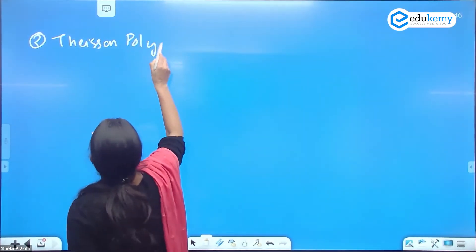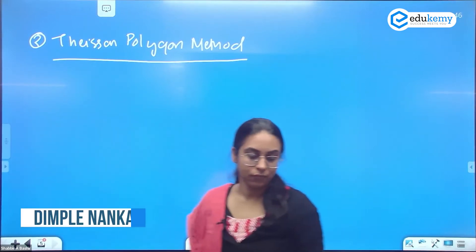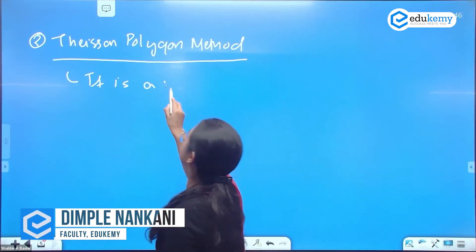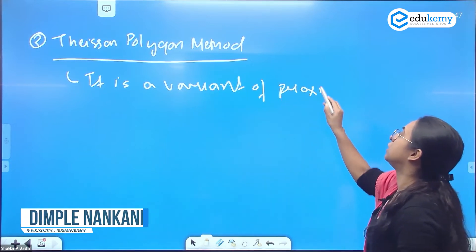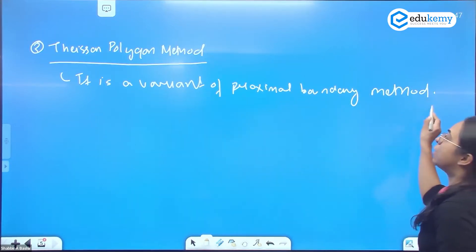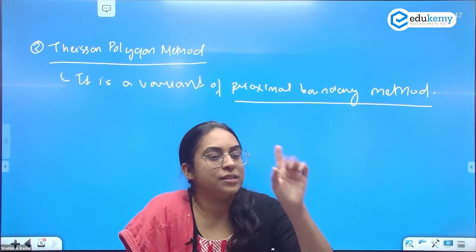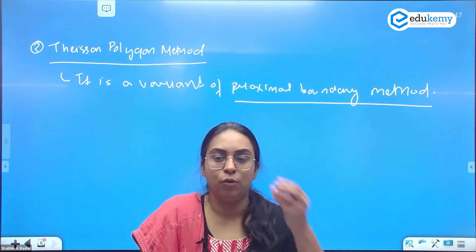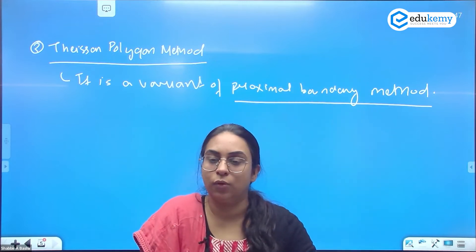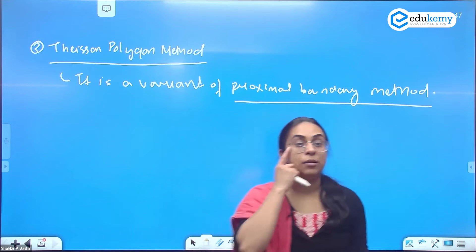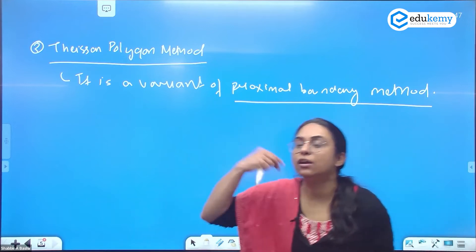Thiessen polygon method is also a variant of the proximal boundary method. The proximal boundary method was actually used for demarcation of one city — for example, Bhopal's sphere of urban influence has been marked. The Thiessen polygon method, however, is used to demarcate the sphere of urban influence for more than one city.